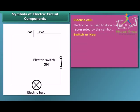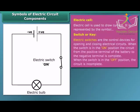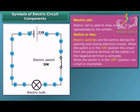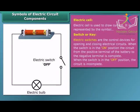A switch or key makes or breaks the connection in a circuit. When the switch is in the on position, the circuit is closed and the current flows throughout the circuit. When the switch is in the off position, the circuit is open, and in this case no current flows through the circuit.